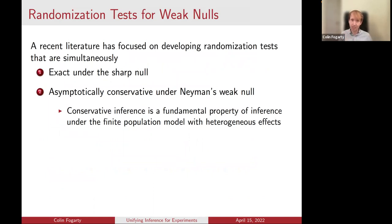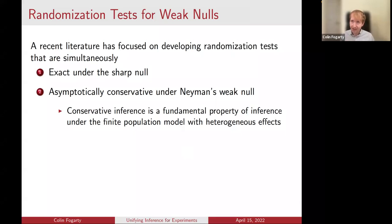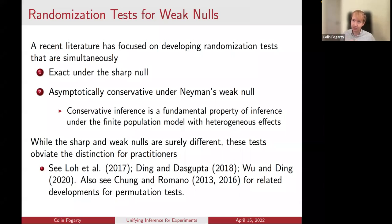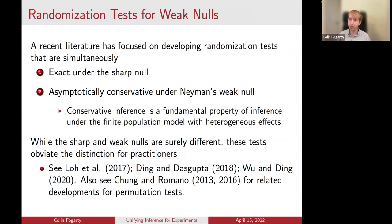A recent literature has focused on developing randomization tests that are simultaneously exact under the sharp null hypothesis of no effect at all, but that also maintain asymptotic conservativeness under Neyman's weak null of no effect on average — to provide a test that simultaneously gives exactness under the sharp null, but still, if a practitioner erroneously uses that test thinking it's actually a test for the null of no effect on average, they'll at least get asymptotically valid inference. This conservative inference will be a property of the finite population model rather than any deficiency of the test being introduced. Under a superpopulation model, this conservativeness would go away.